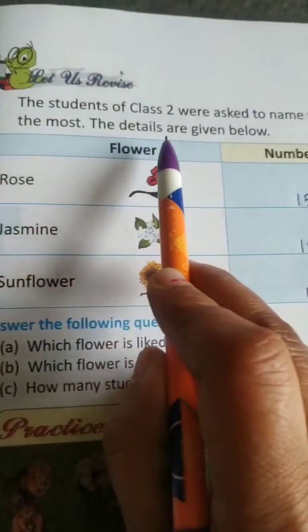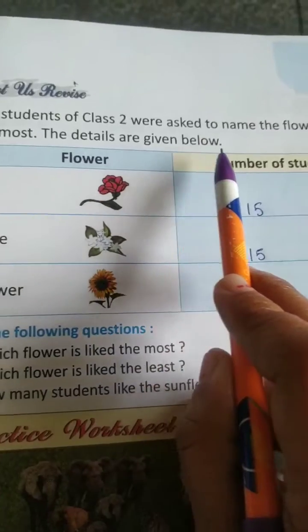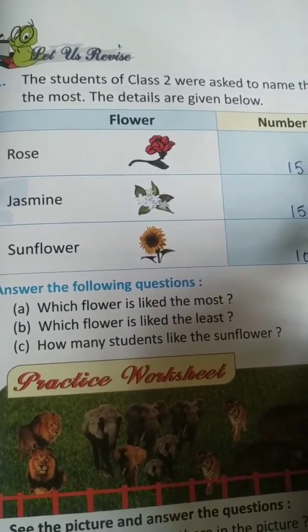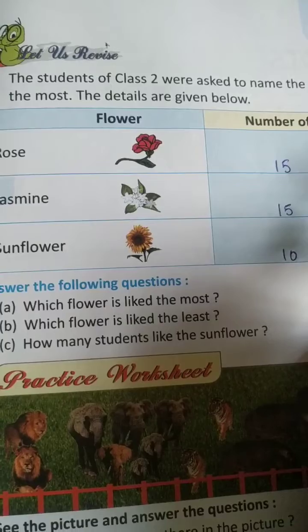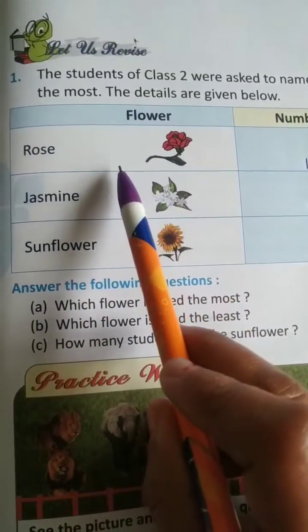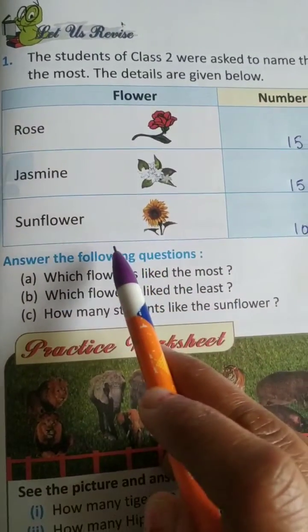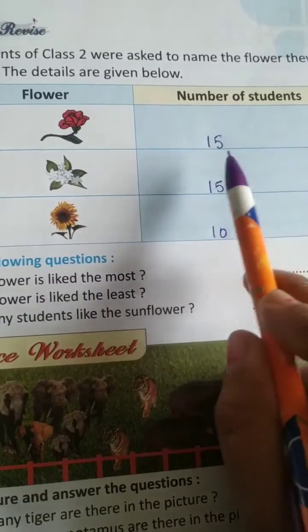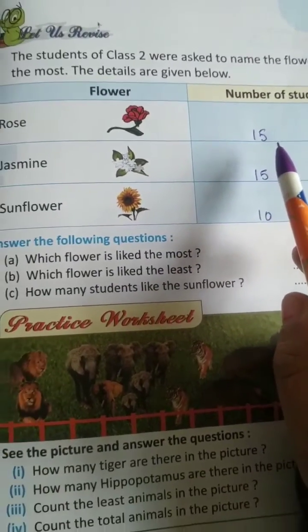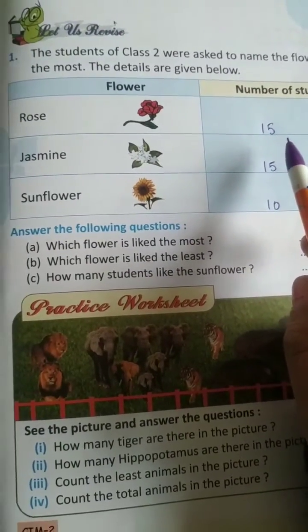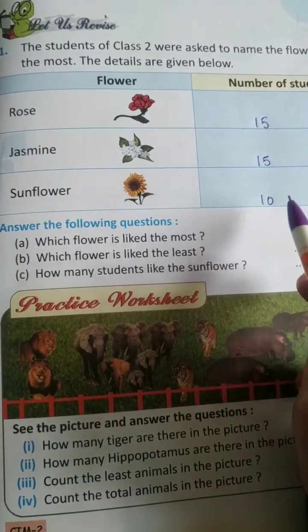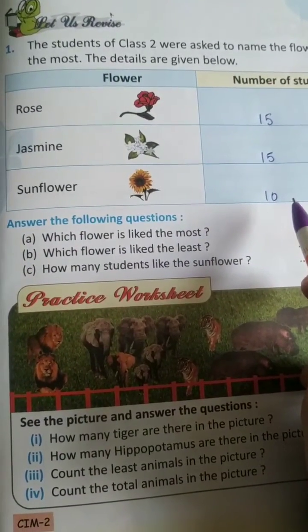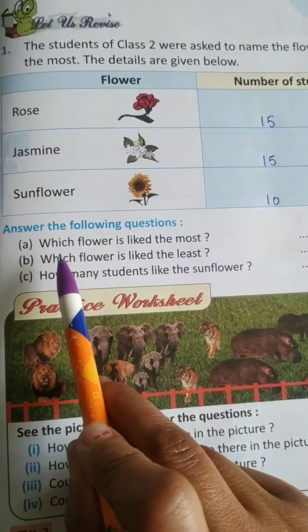First question: the students of class 2 were asked to name the flowers they like the most. The details are given below. The flower names are rose, jasmine, and sunflower, with the number of students written here. Rose is liked by 15, jasmine is liked by 15, and sunflower is liked by 10. Now we have to find out the answers of these questions.